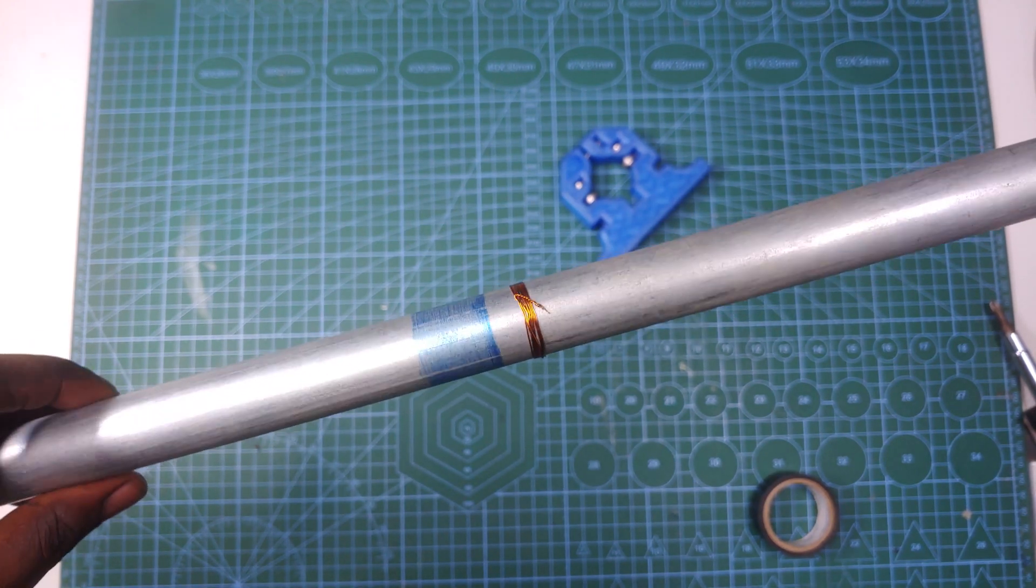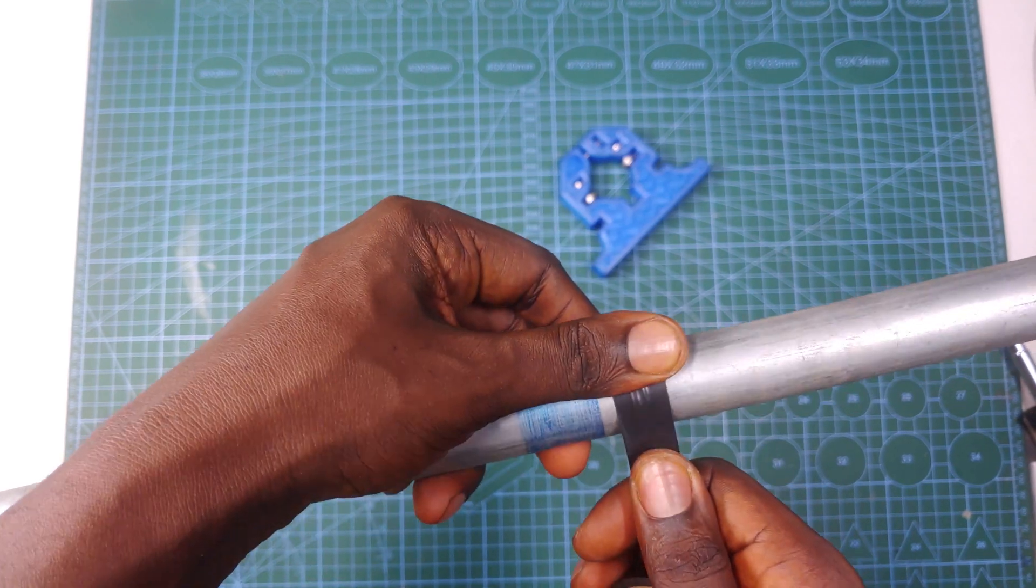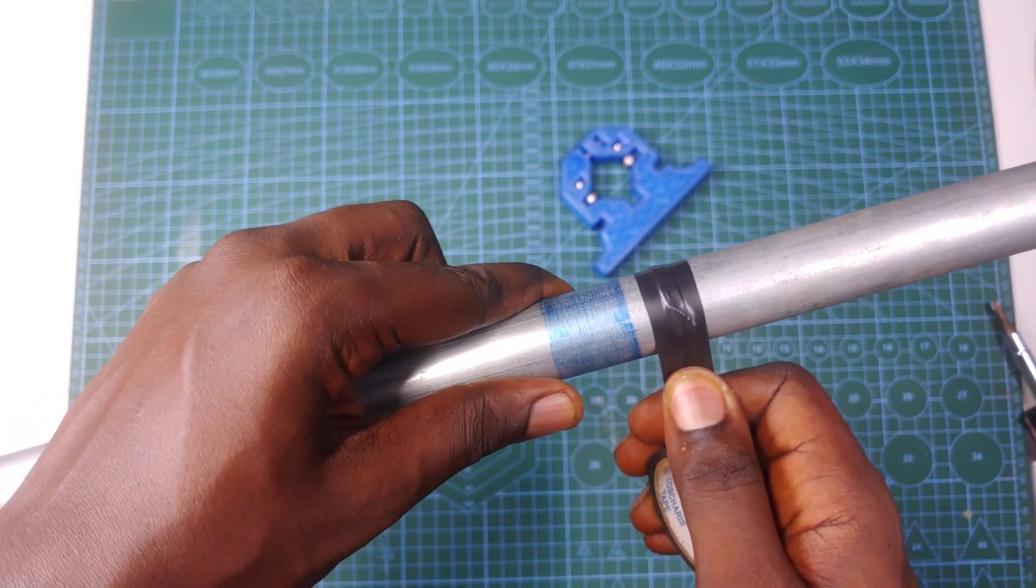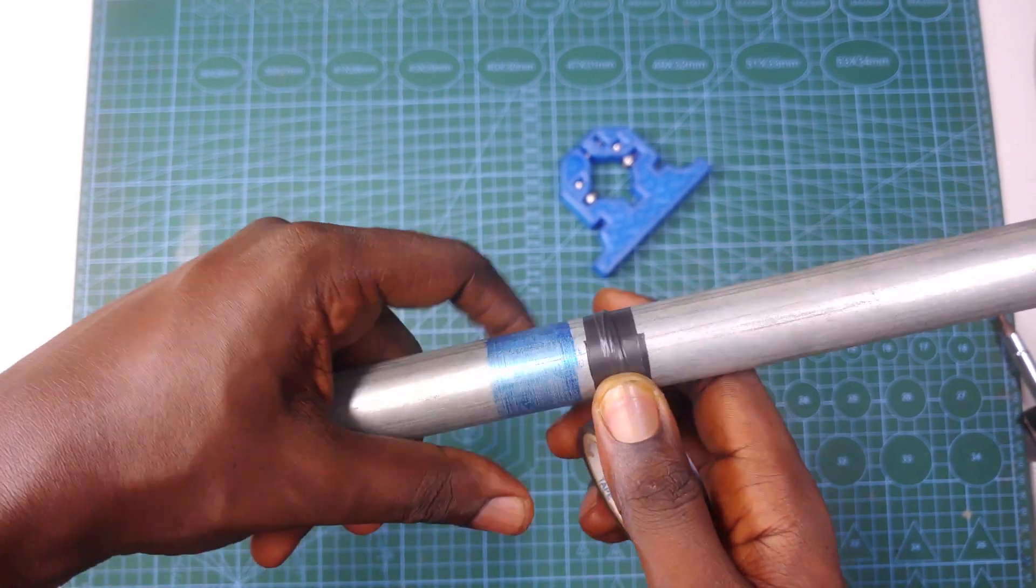To demonstrate the difference between the rigid tension rollers and the spring tension rollers, I wrapped some copper wire around the pipe and wrapped some tape around it. This will allow me to simulate a pipe that's not perfectly smooth.